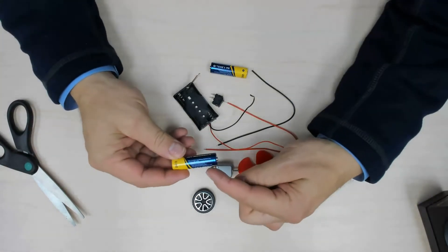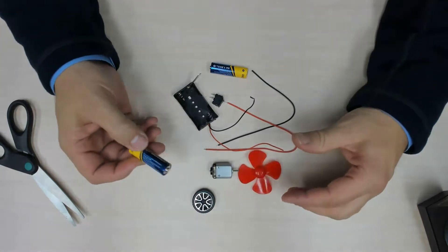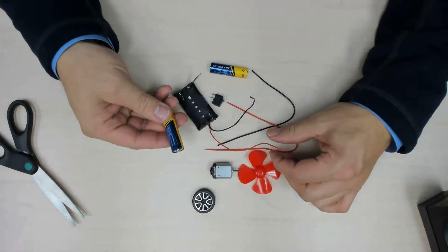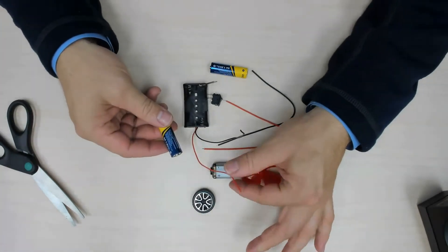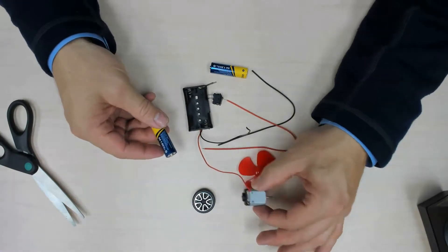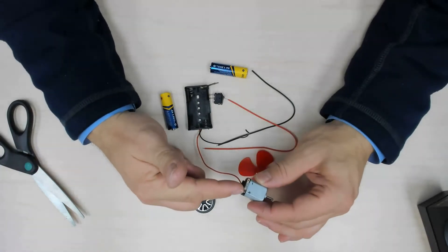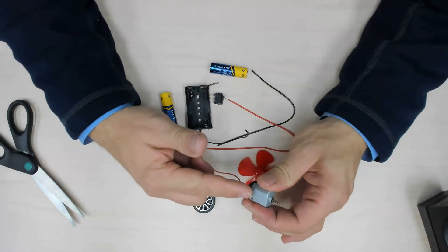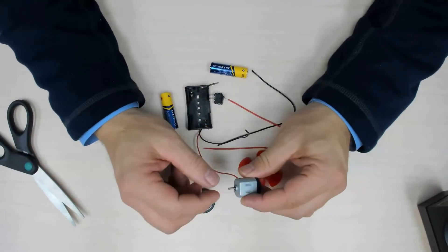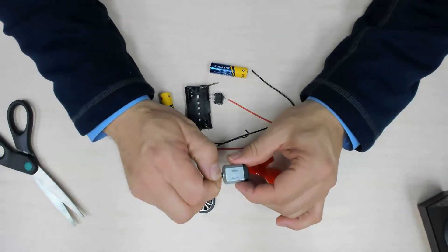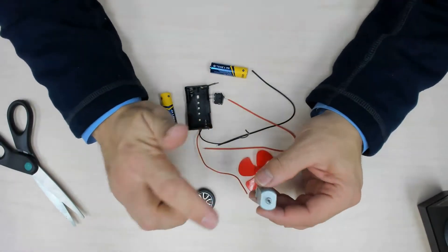We're going to take the chemical energy in this battery and transform it into electric energy in an electrical circuit. Then we're going to send that electrical energy through the wires to a motor, and this motor is going to convert that electric energy into rotational motion, or mechanical energy.